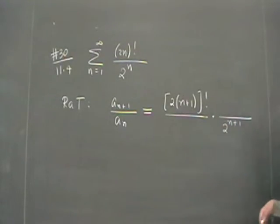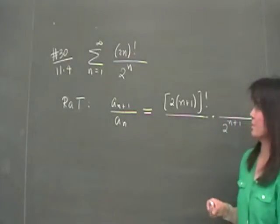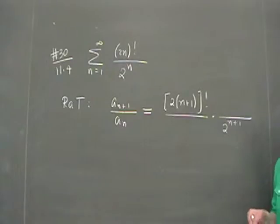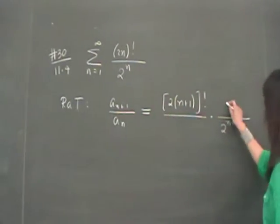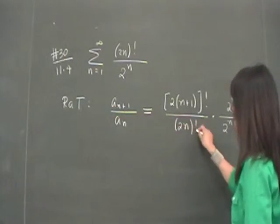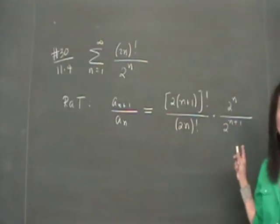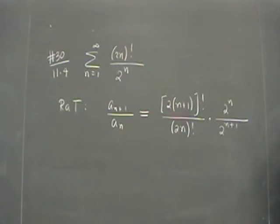So like factors. And then divided by a sub n is really the same as multiplying by the reciprocal of a sub n. The reciprocal of a sub n is 2 to the n. So I can put the 2 to the n here, and then I have the 2n factorial here. Is this expression clear?